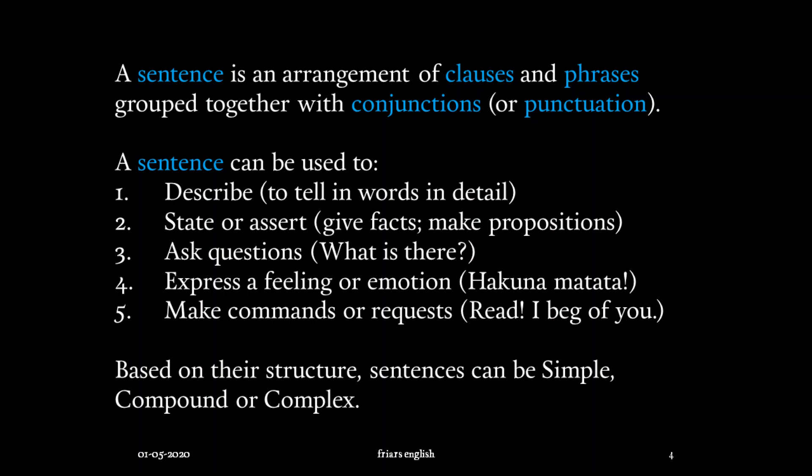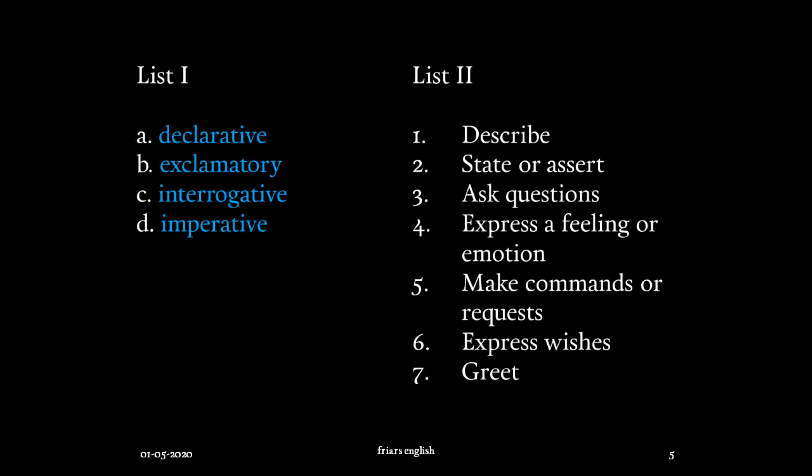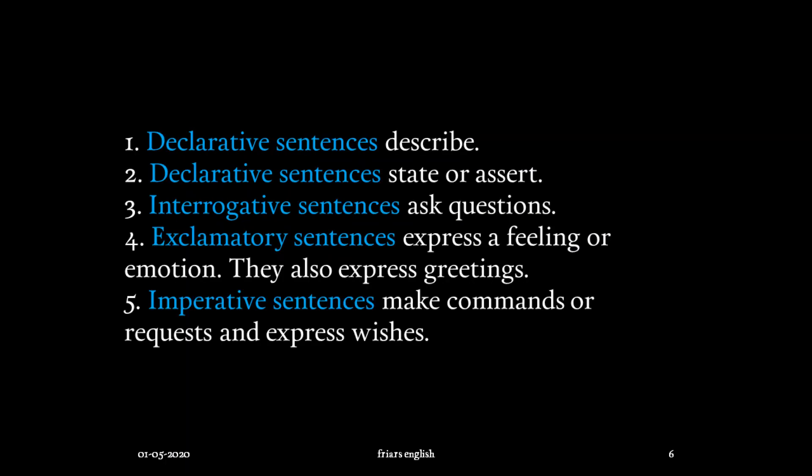Let's move on. Here are types of sentences based on their use, and I want you to match items on the left to items on the right. Declarative sentences are sentences that describe. Declarative sentences can also state or assert. Interrogative sentences ask questions. Exclamatory sentences express a feeling or emotion. Exclamatory sentences also express greetings.